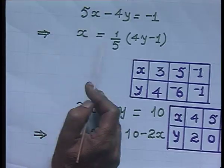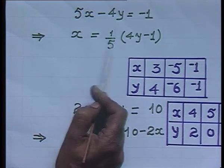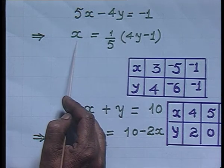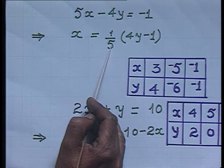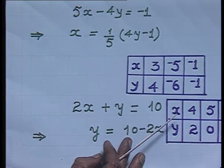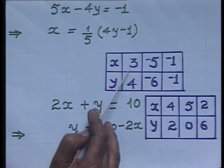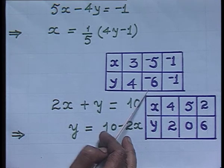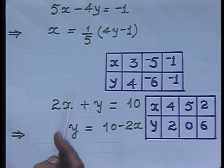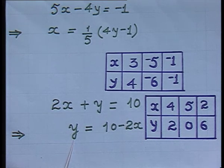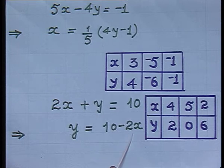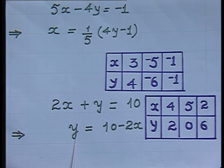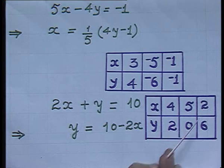For the first equation 5x minus 4y equals minus 1, making x the subject gives x equals one-fifth of (4y minus 1). The ordered pairs satisfying this are (3, 4), (minus 5, minus 6), and (minus 1, minus 1). For the second equation 2x plus y equals 10, making y the subject avoids fractions. The ordered pairs for this are (4, 2), (5, 0), and (2, 6).